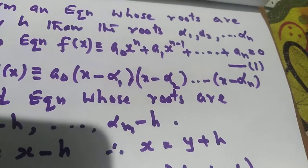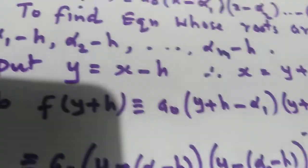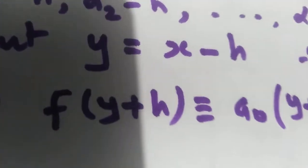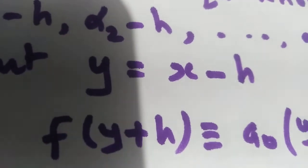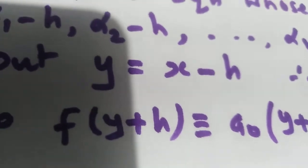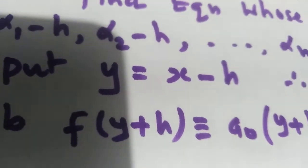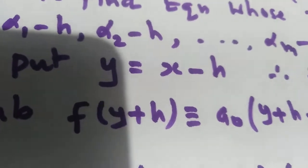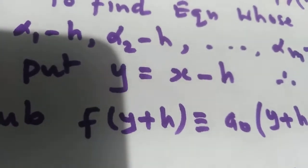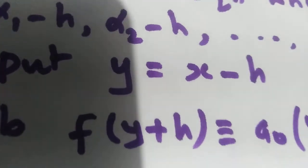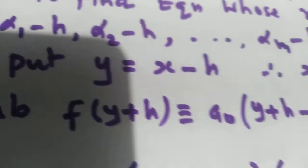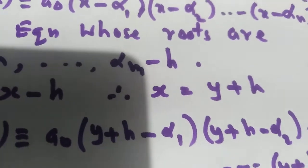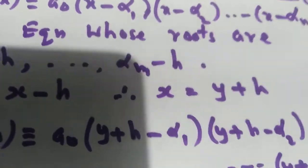Therefore, we take y equal to x minus h. Because when x takes the values alpha 1, alpha 2, etc., alpha n, y takes the values alpha 1 minus h, alpha 2 minus h, etc., alpha n minus h. So an equation in y is the required equation. From y equals x minus h, we get x equal to y plus h. We substitute x equals y plus h in the given equation.